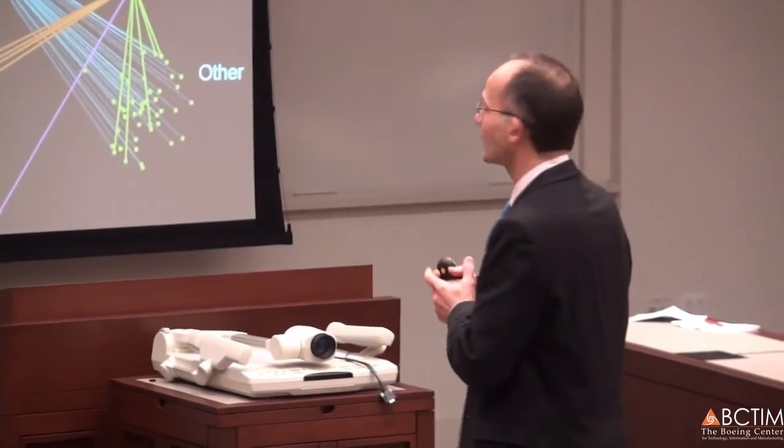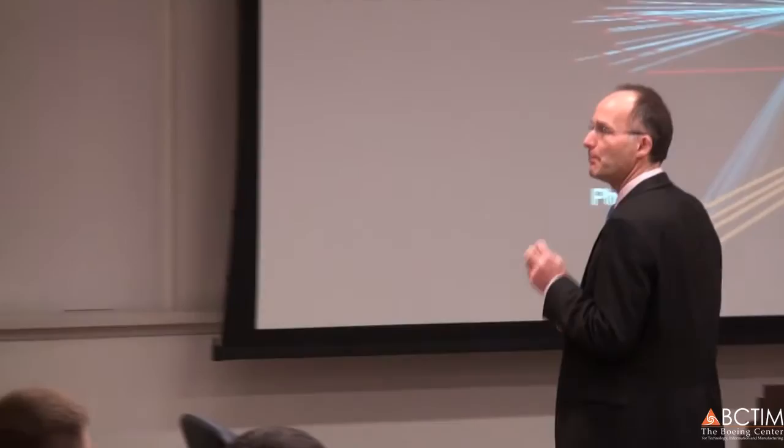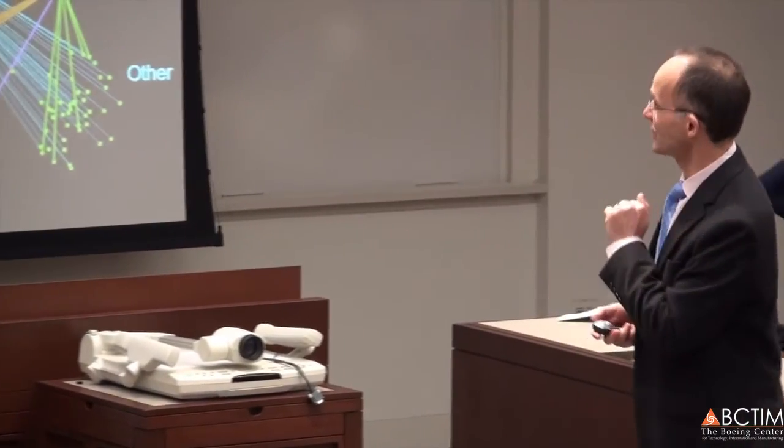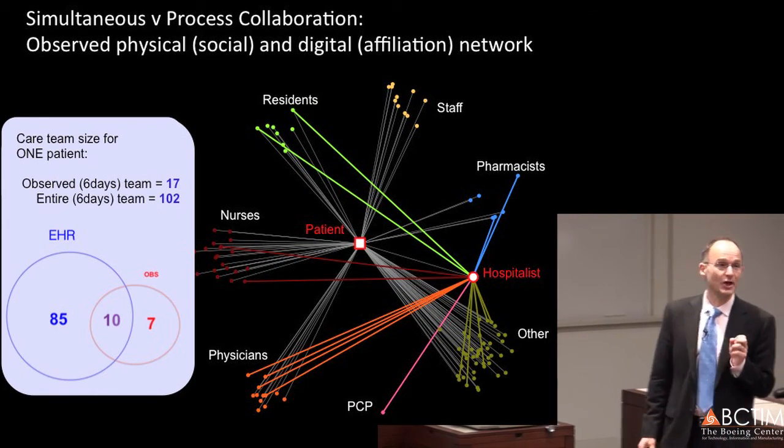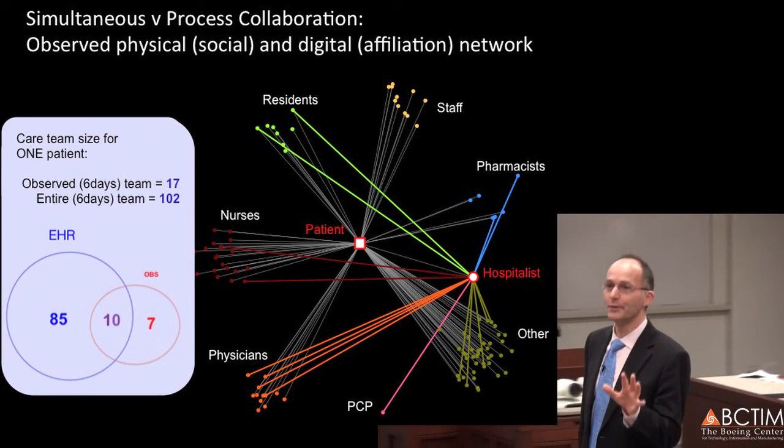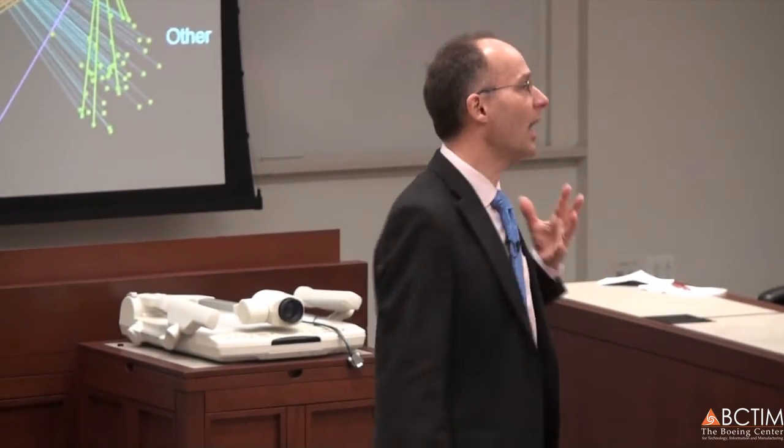I'd like you to make a quick guess as to how many people are involved in the care process of this patient. We observed for six days and took those exact six days and looked at the electronic healthcare record. The observed team is 17 people, and the entire team is 102. This is actually fairly representative — a hundred people touch the file of an average patient. I'll show you later statistics where patients were touched by 385 people. And you can start seeing why this is such an expensive process.